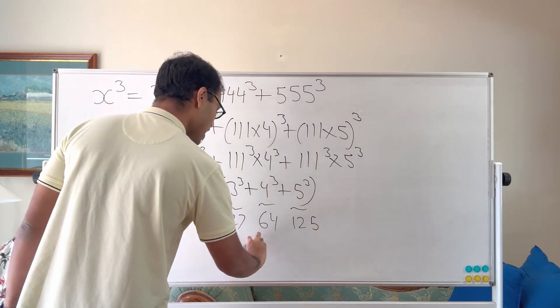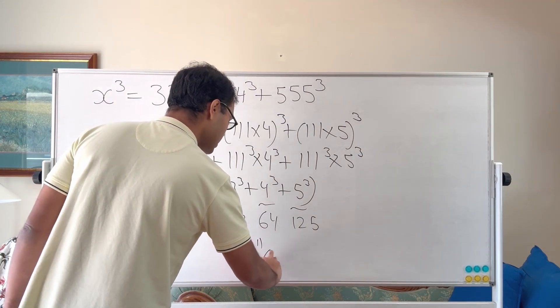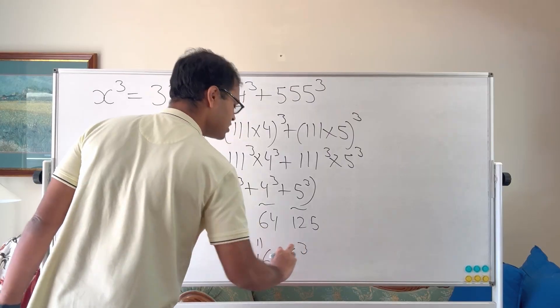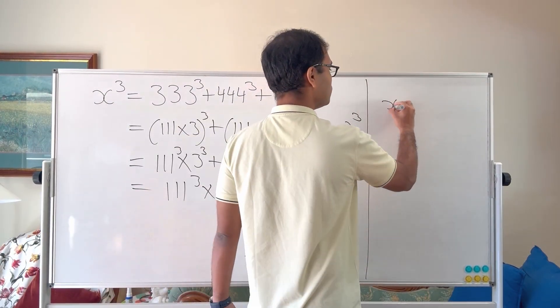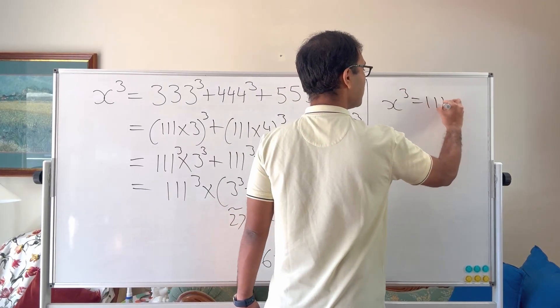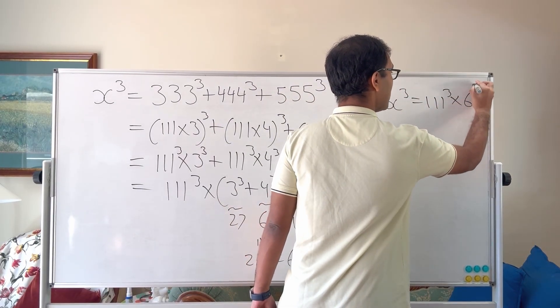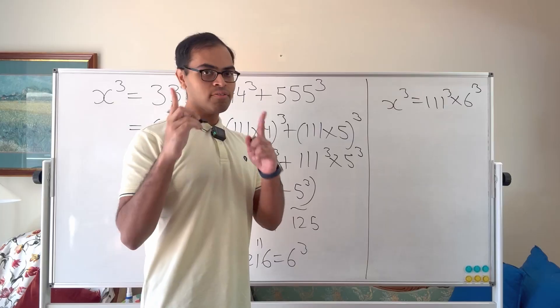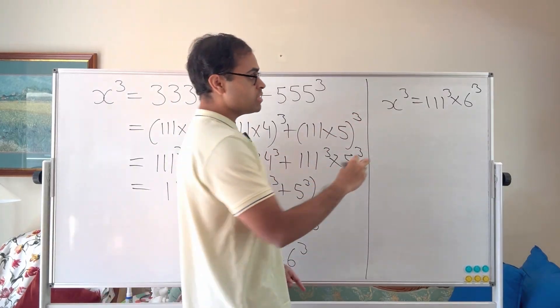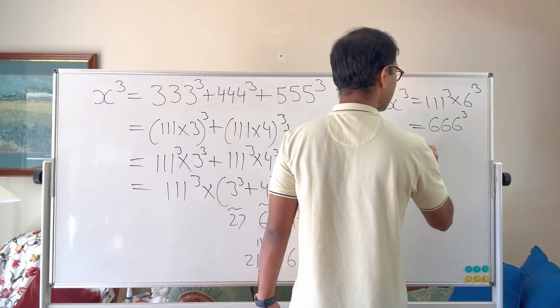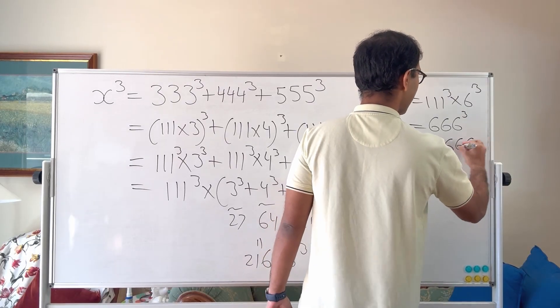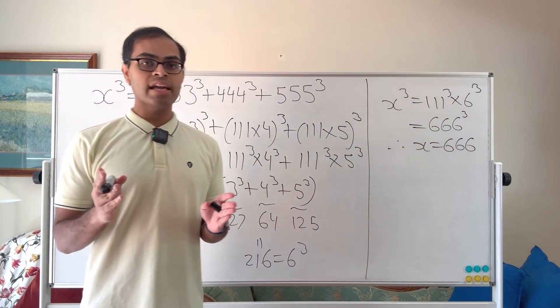So this whole sum is equal to 216 which is nothing other than 6 cubed. That's so elegant because now we've got 111 cubed times 6 cubed. So we've got x cubed equals 111 cubed times 6 cubed. And you're going to watch till the end because I've got something mind-blowing for you after this. This is going to equal to 666 cubed. So therefore x is equal to 666. That is so beautiful that we could solve for x in that nice way.